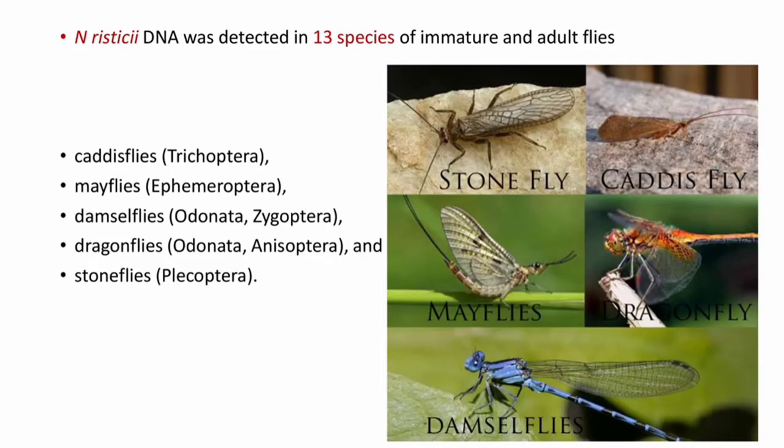Neorickettsia risticii DNA was also detected in 13 species of immature and adult flies, including caddisflies, mayflies, damselflies, dragonflies, and stoneflies. You can see the different flies in this picture.